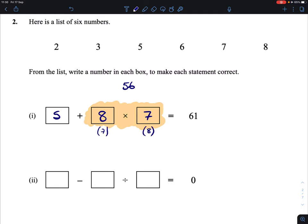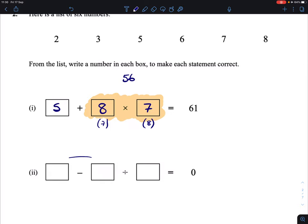In the next part, we are looking for a difference and we're also looking for a quotient, a division sum. Again, BIDMAS will decide which happens first. The divide sum must happen first.